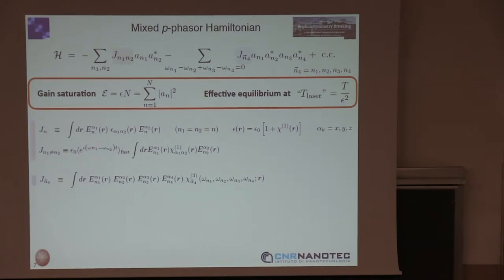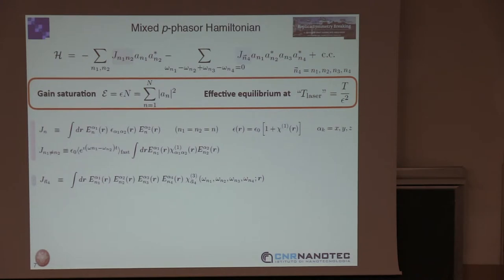Are the A_n quantum operators? No, they were quantum operators in the first page, but after 10 pages there is a classical degradation to Langevin equations, and eventually we can write it in a potential way. We start from the Jaynes-Cummings description of the light-matter interaction with excited atomic levels.